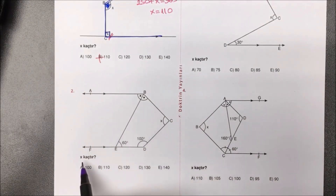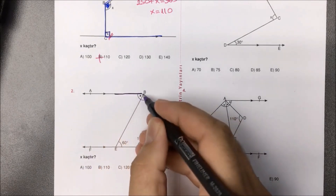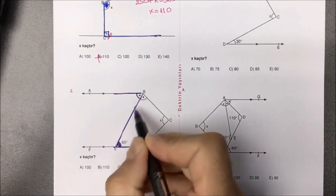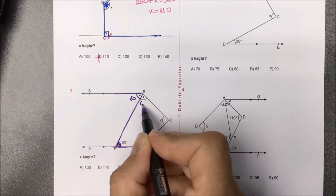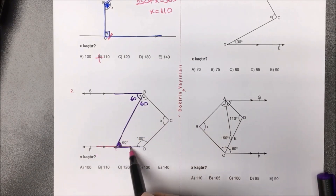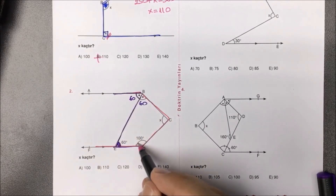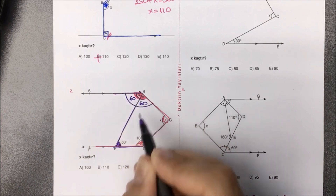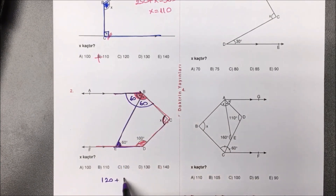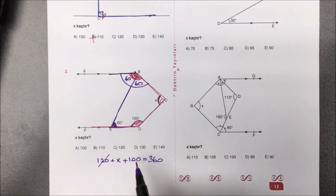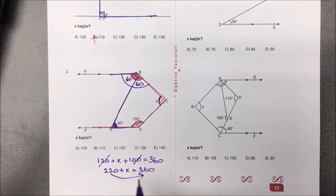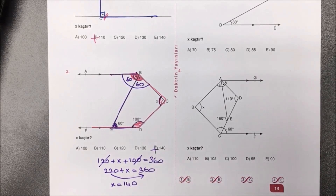İkinci soruya bakacak olursak verilenlere göre X kaçtır diye sorulmuş. Öncelikli olarak burada Z kuralı dikkatimi çekiyor. Z kuralından 60'ı buraya taşıdım. Açı ortayları görüyorum; hemen 60'ı ikiye böldüm, 30 diyorum. Daha sonra kalem ucu kuralını göreceğim: birinci açım, ikinci açım ve üçüncü açım. Şu tepedeki komple 120 derece artı buradaki 100 derece, kaçı eşitti? 360 derece. 120 ile 100'ü topladık 220; artı X eşittir 360 derece. 360'dan 220'yi çıkartırsak aradığımız yanıt 140 olarak bulunmuş olur.